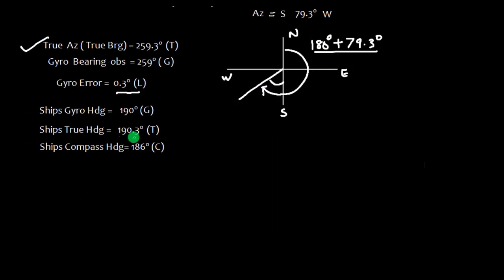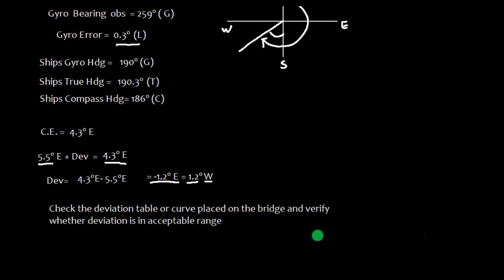This is compass least, error east. So the difference is 4.3 degree east. By the way, compass error is the algebraic sum of variation and deviation. The variation we obtain is 5.5 degree east plus deviation equals 4.3 degree east. So algebraically we just bring it here on the right hand side, so we get minus 1.2 degree east. Since this is minus 1.2, if we change it, it becomes 1.2 but the east will convert it to west. That is one way of doing it. All you have to do now: check this deviation table or the curve which is placed on the bridge and verify whether this deviation is in acceptable range.